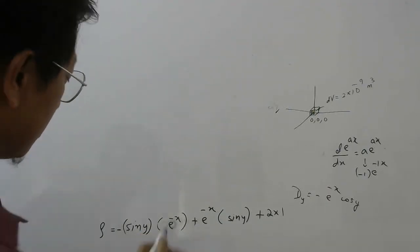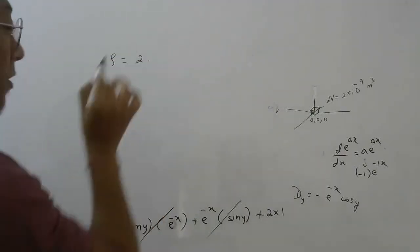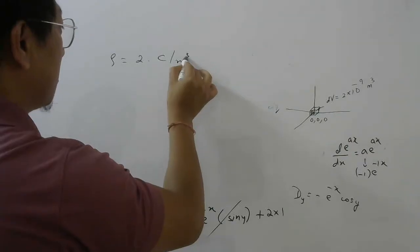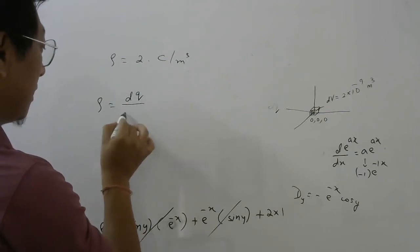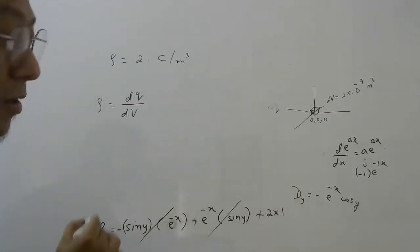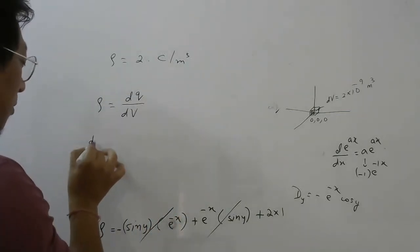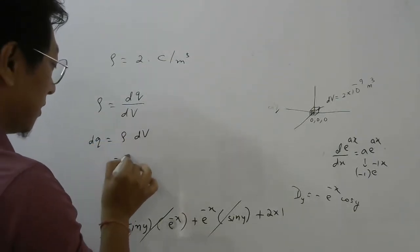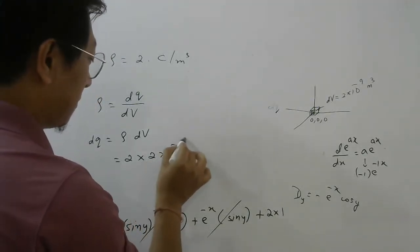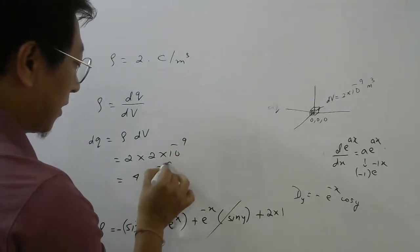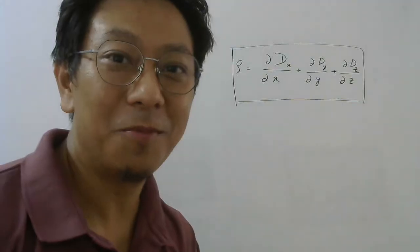The −e^(−x) sin y and +e^(−x) sin y cancel each other. So the charge density ρ equals 2, with units coulomb per meter cube. Since density = dq/dv, charge per unit volume, the charge in the small volume is density × volume = 2 × (2×10⁻⁹) = 4×10⁻⁹ coulomb, which is 4 nano coulomb. So the answer is 4 nano coulomb.